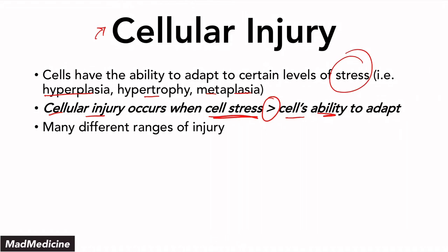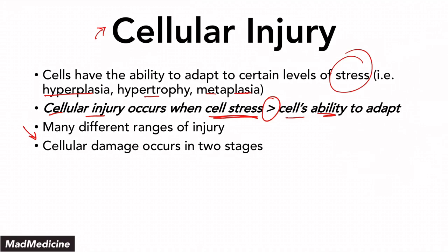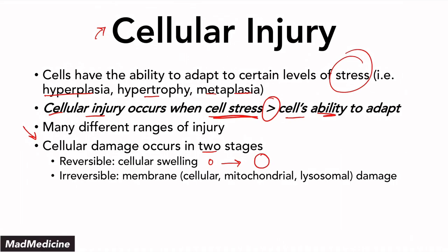There are many different ranges of injury and they depend on the type of injury, the severity of the injury, as well as the type of cell itself. Cellular damage usually occurs in two stages. In the first stage, you have the reversible stage, which is characterized by cellular swelling — a cell is essentially going to expand and swell up in size.